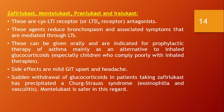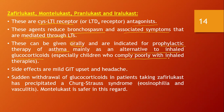The second category — leukotriene receptor antagonists — reduces bronchospasm and associated symptoms mediated through leukotrienes. These can be given orally and are indicated for prophylactic therapy of asthma, mainly as an alternative to inhaled glucocorticoids, especially in children who comply poorly with inhaled therapies. Side effects are mild GI upset and headache.